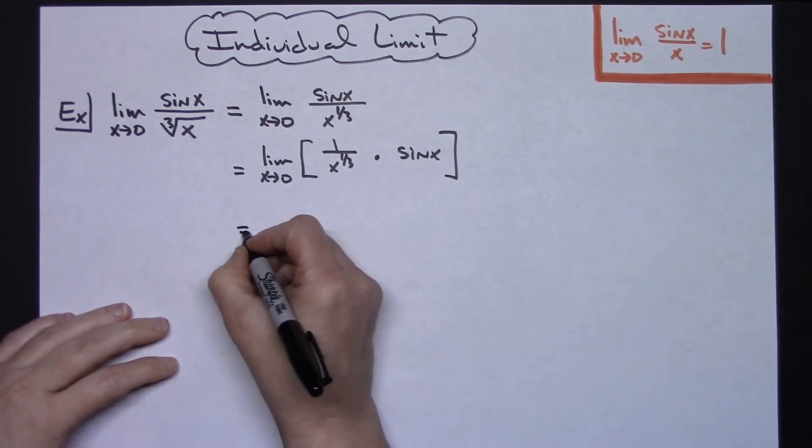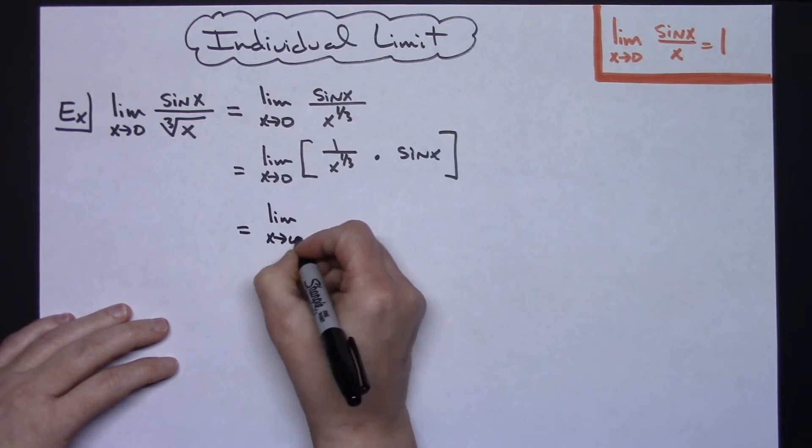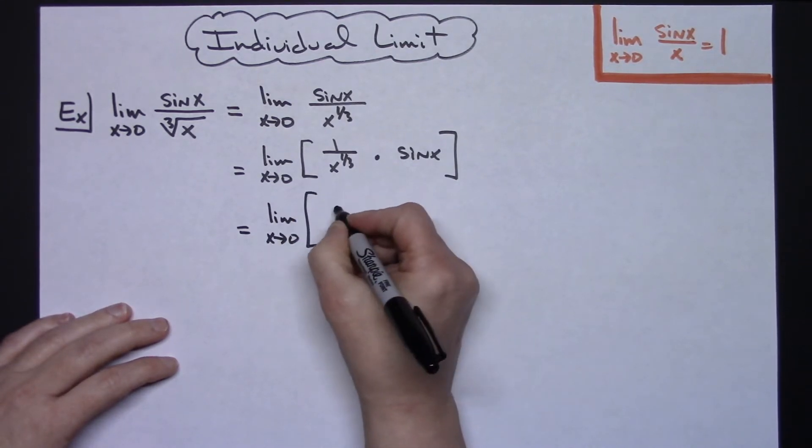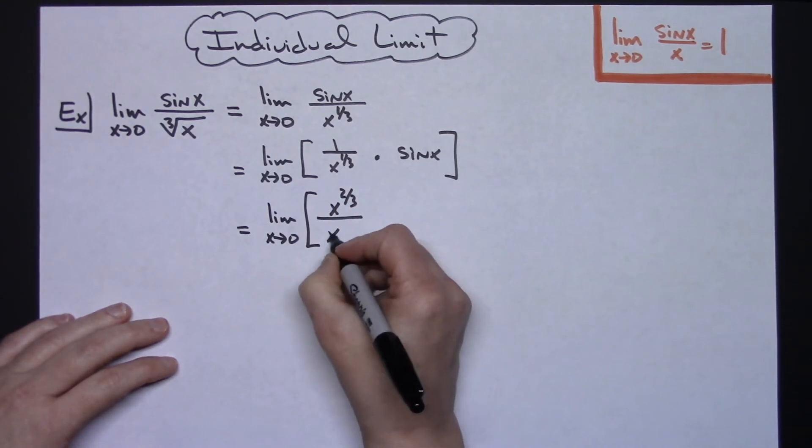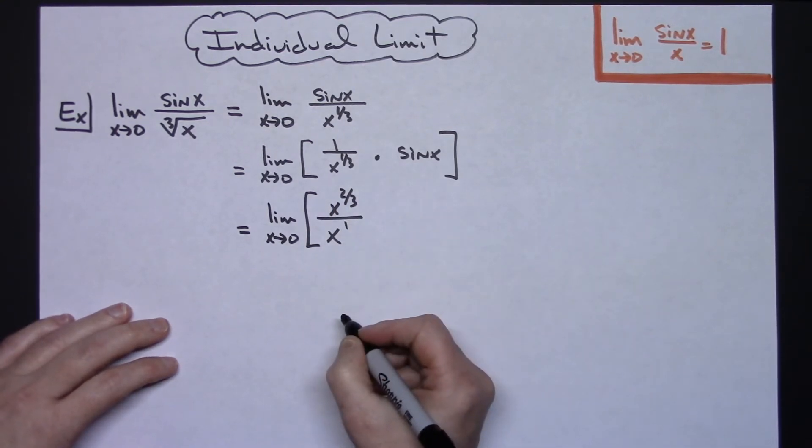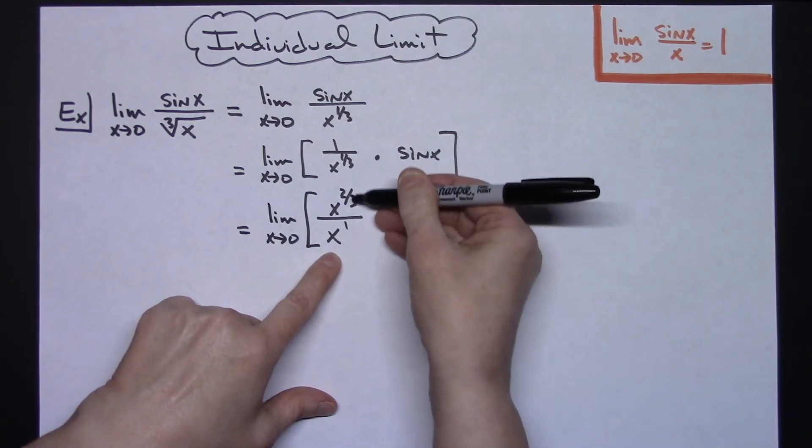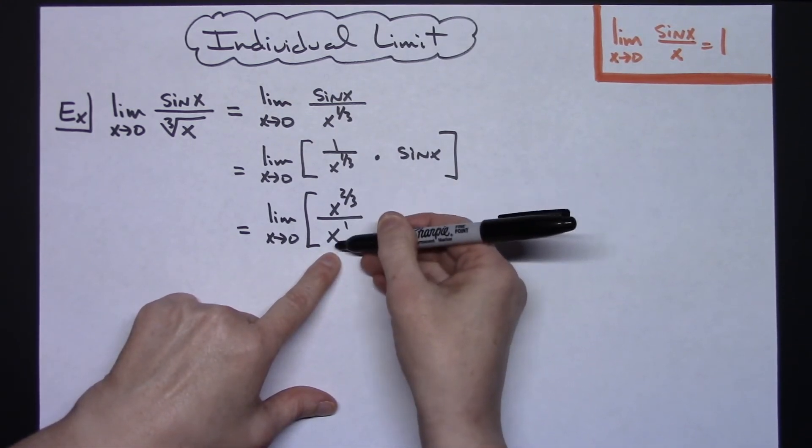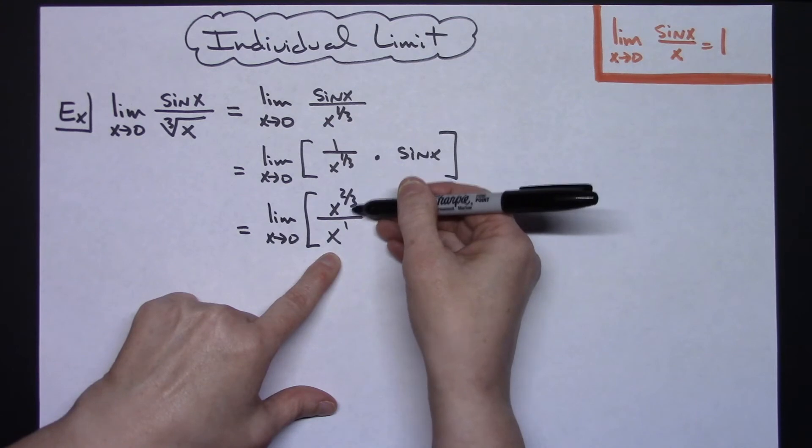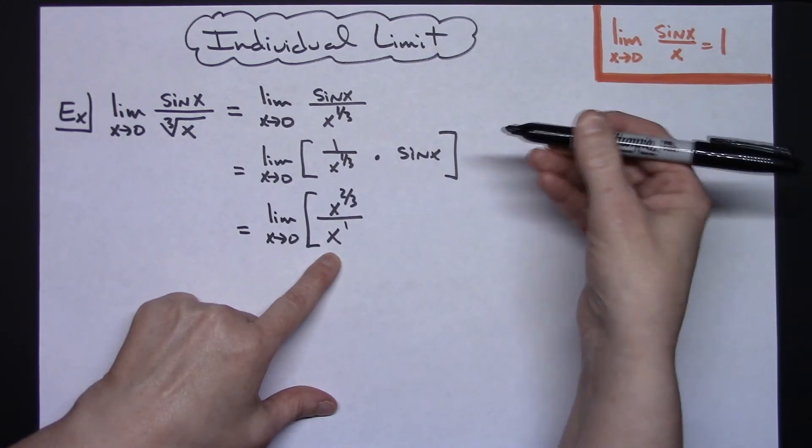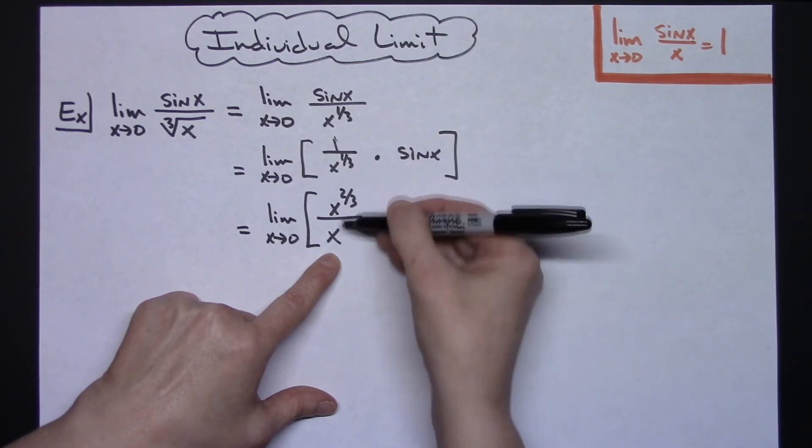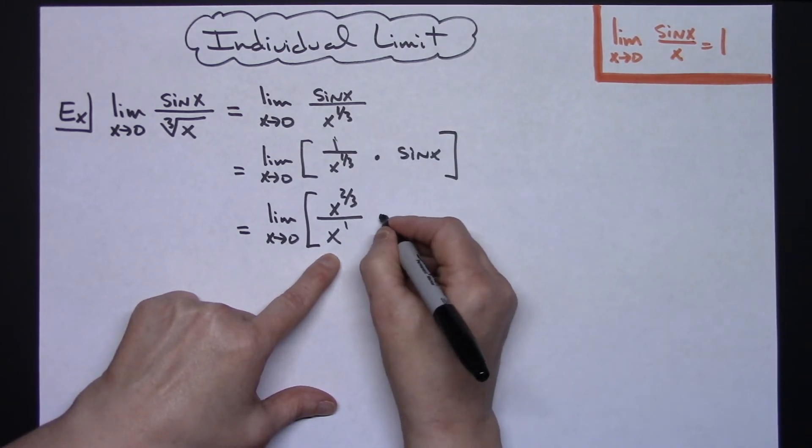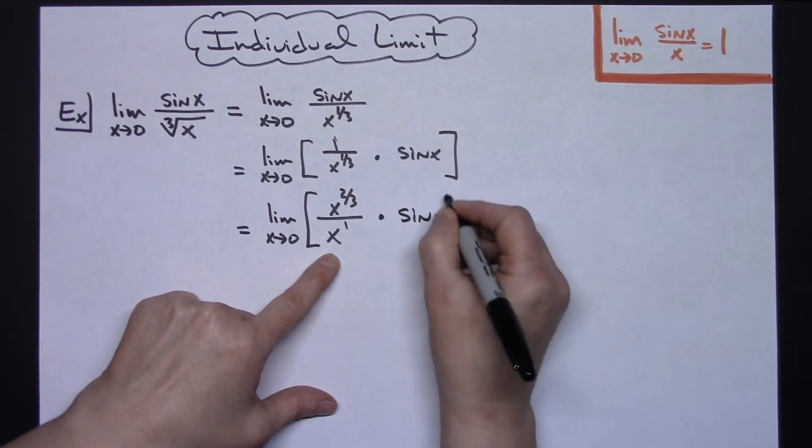If we try x to the two-thirds over x to the first, use those laws of exponents. When dividing like bases, subtract the exponents. Two-thirds minus one gives negative one-third, which moves to the bottom and becomes positive. So these two expressions are equivalent. I still have that sine x here.